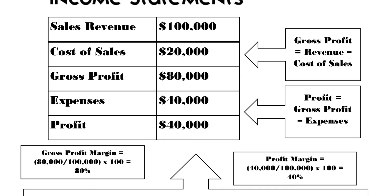In terms of profit, we take our gross profit and deduct our expenses from it, which gives us a final total of $40,000. It's sometimes known as operating profit or net profit. To get the profit margin, we use our 40,000, divide it by 100,000, and times it by 100 to get 40%. You'll always get a difference between gross profit and profit margin — the profit margin is lower — and that's the case if the business sells products rather than services.